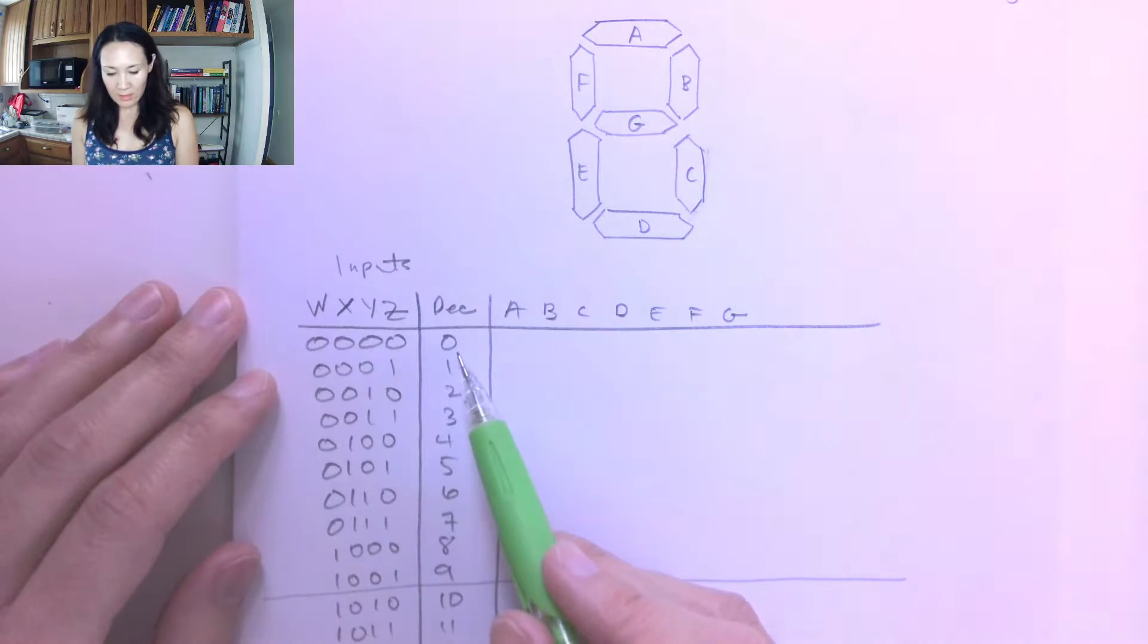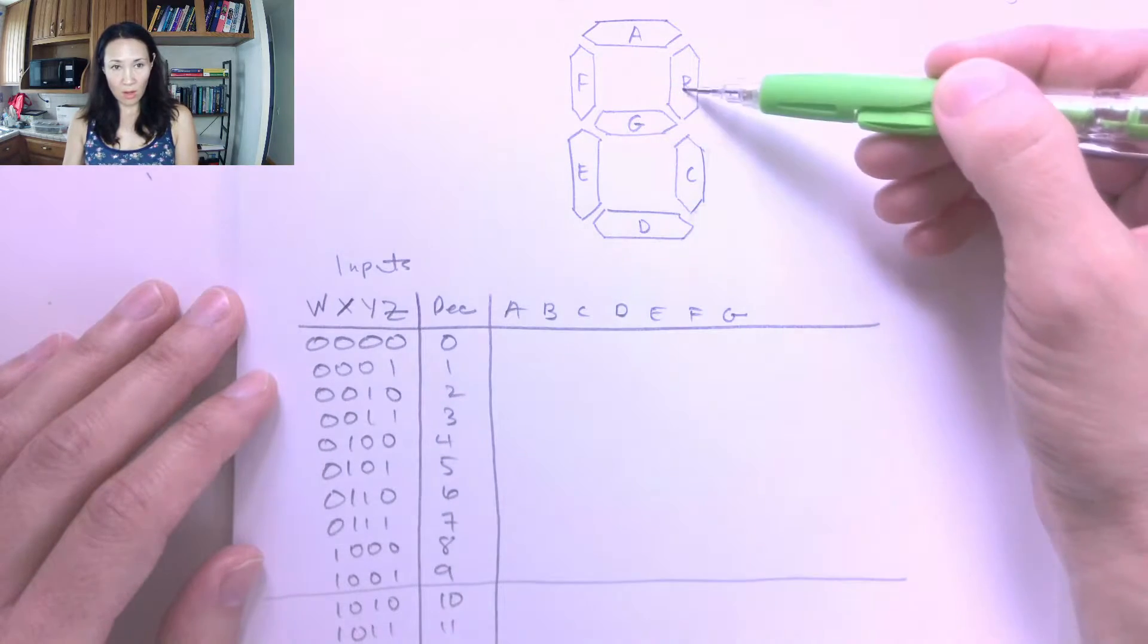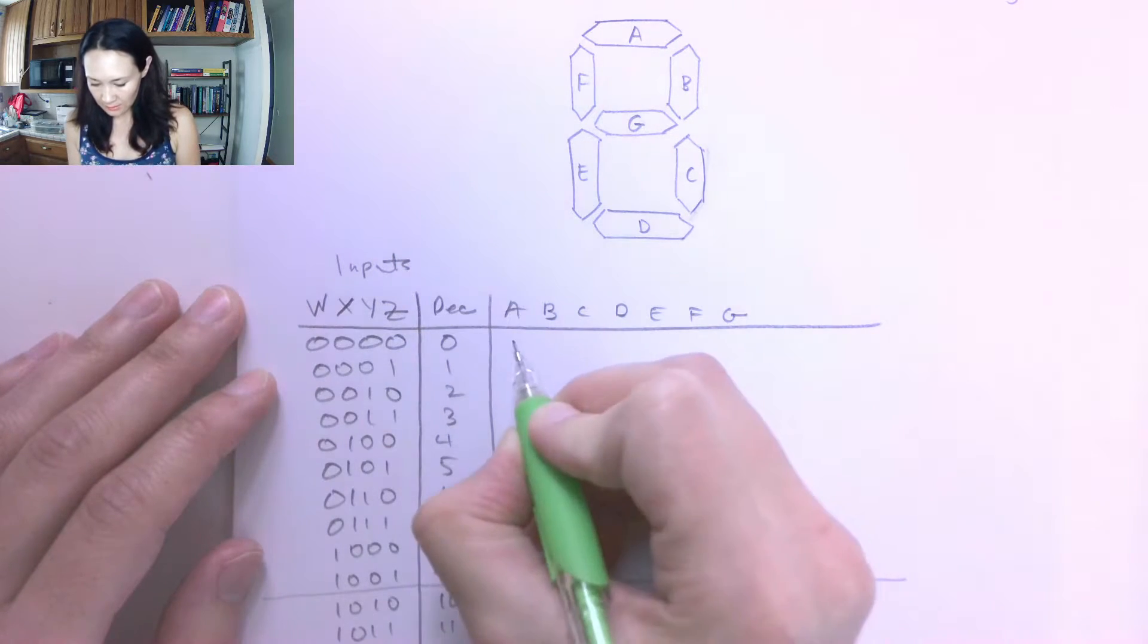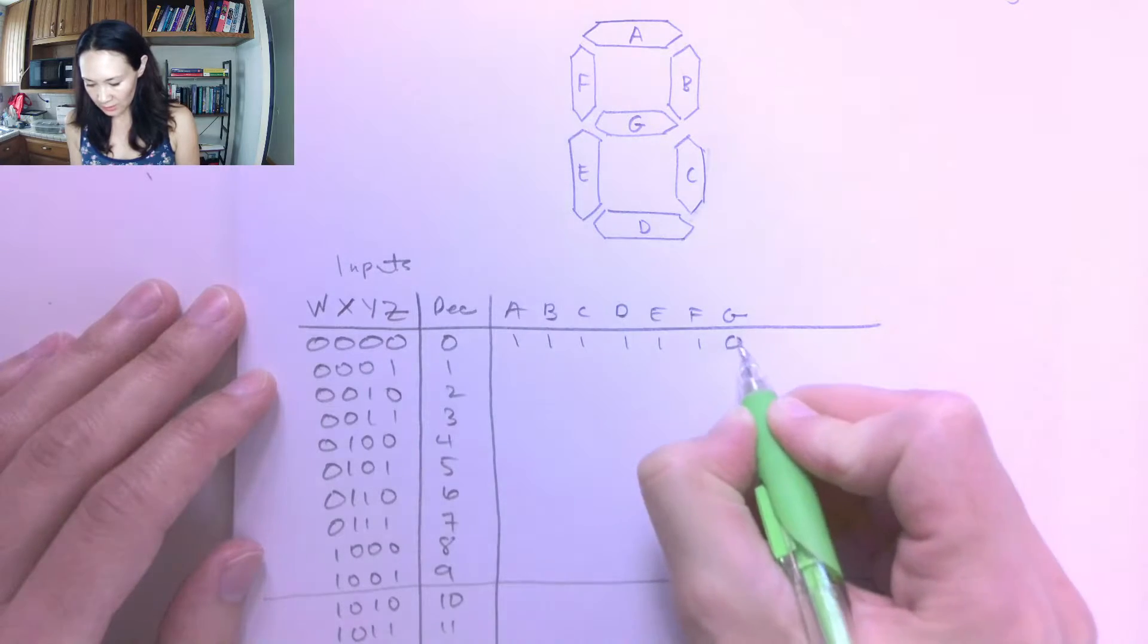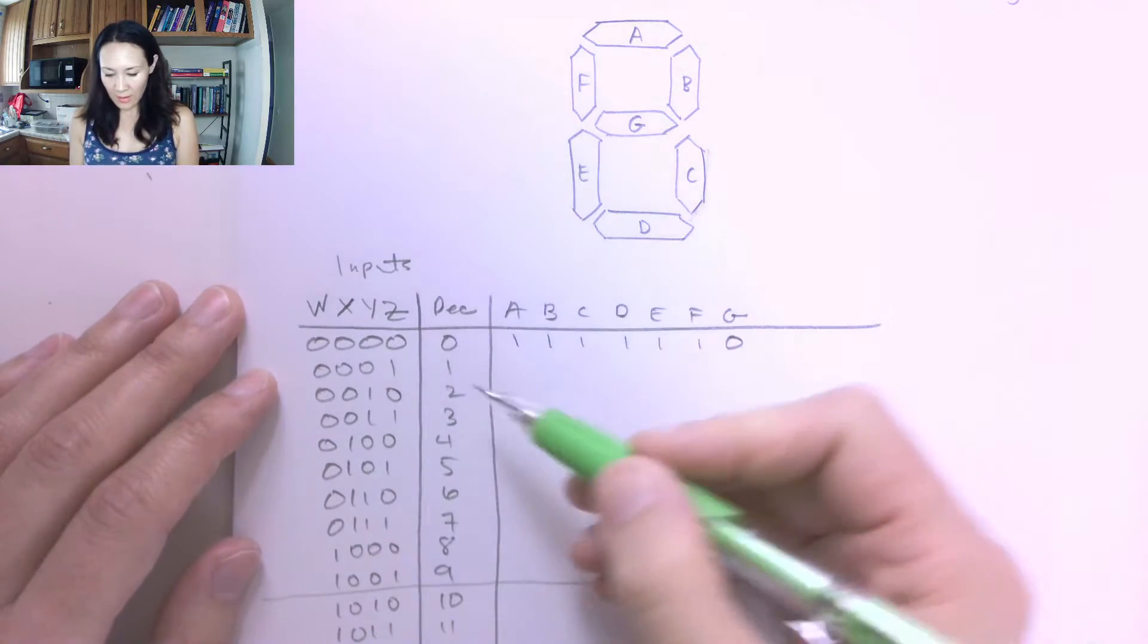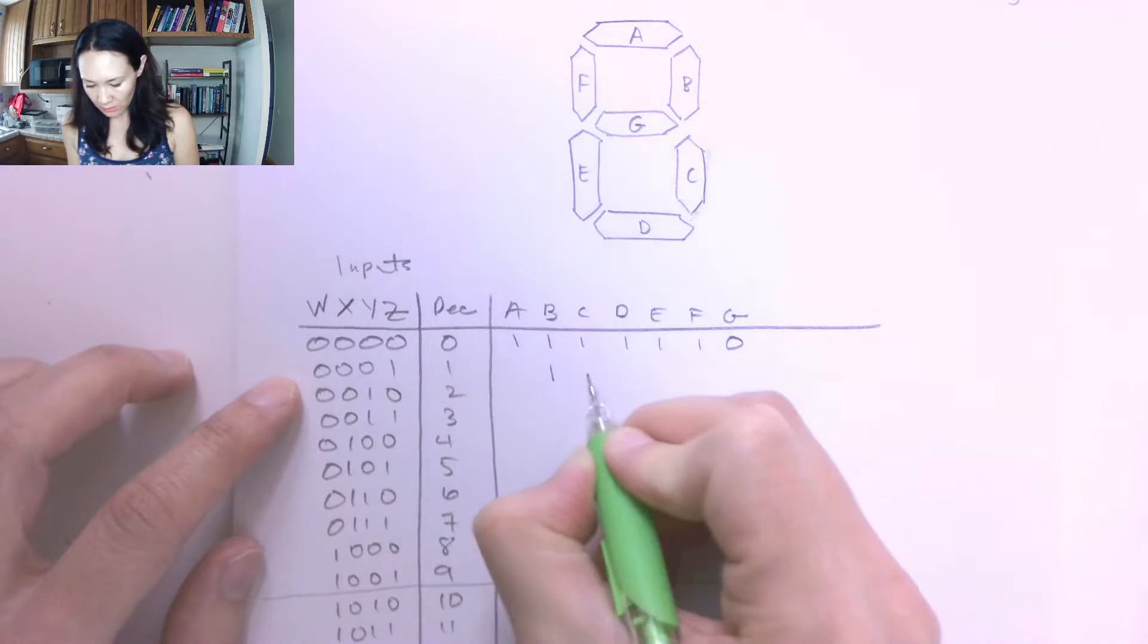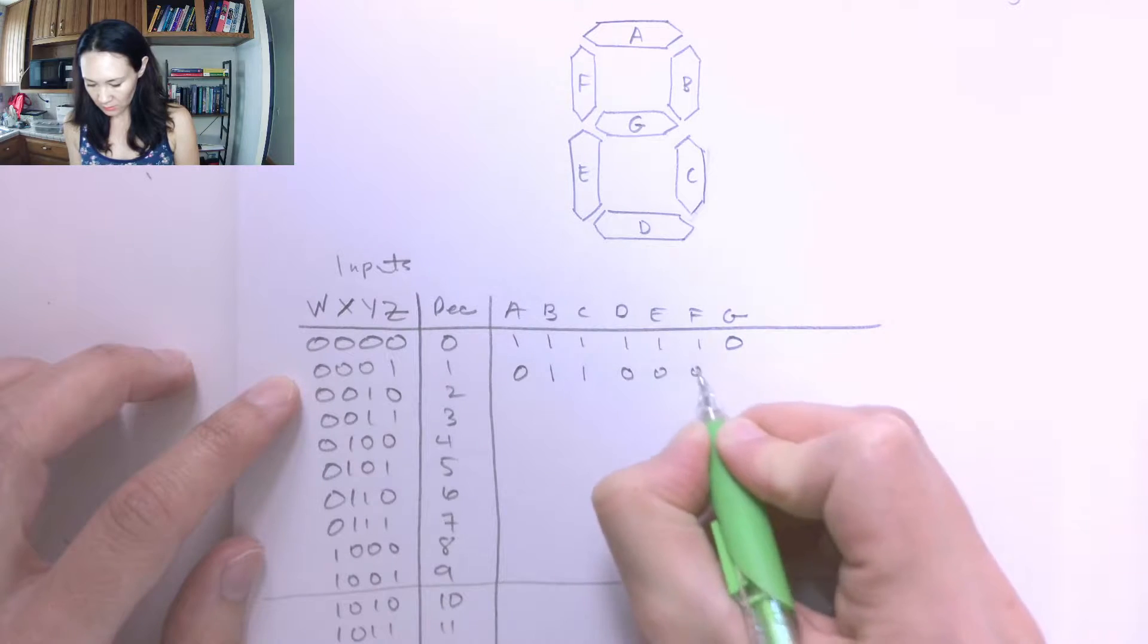So if we want to display the number 0, that means we want these output LEDs all on, but we want G off. So in the truth table, it looks like this: on, on, on, on, on, on, and G is off. Okay, so how about the number 1? For 1, we only want B and C to be 1, and we want the rest of them to be off. 0, 0, 0, 0, 0.